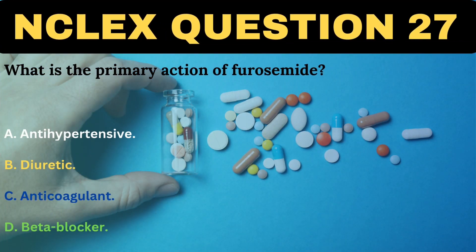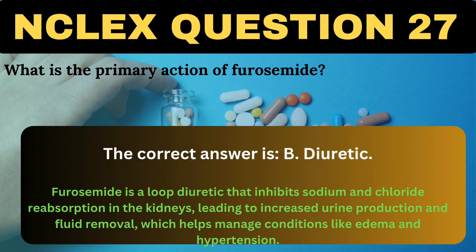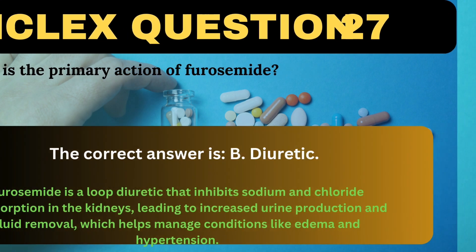What is the primary action of furosemide? A. Antihypertensive. B. Diuretic. C. Anticoagulant. D. Beta blocker. The correct answer is B, Diuretic. Furosemide is a loop diuretic that inhibits sodium and chloride reabsorption in the kidneys, leading to increased urine production and fluid removal, which helps manage conditions like edema and hypertension.